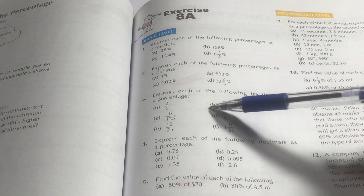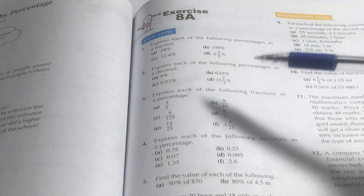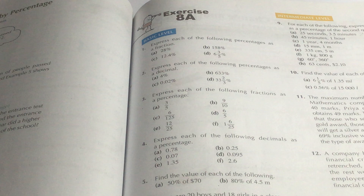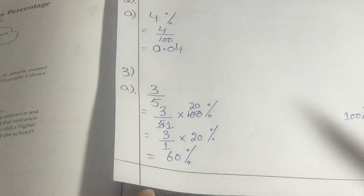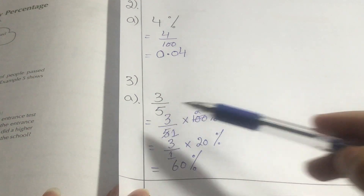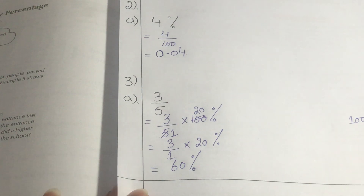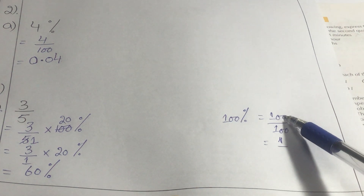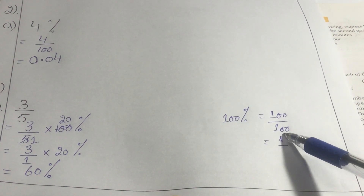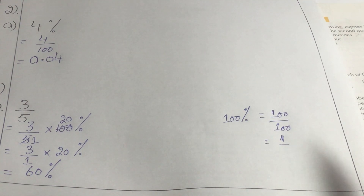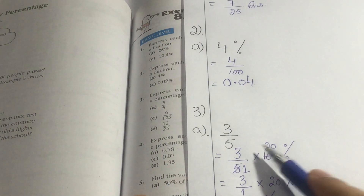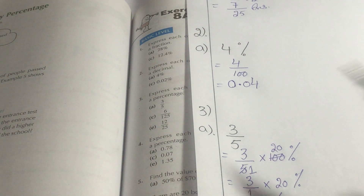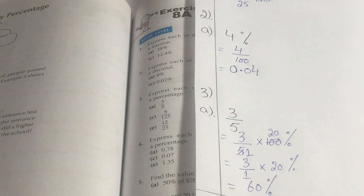Both questions are essentially the same — fraction to percentage and decimal to percentage. The difference is just that in the previous question you had fractions, and in this question you have decimal numbers. The same procedure we used for question number three — multiplying with 100% — we are going to use here as well, because both are the same. The only difference is fraction versus decimal number.